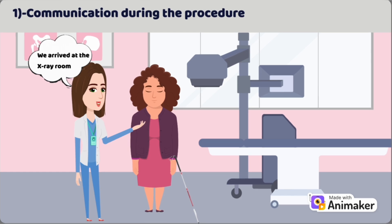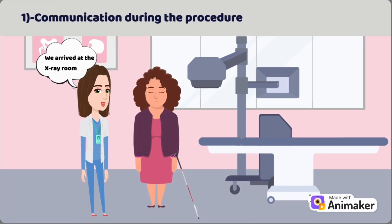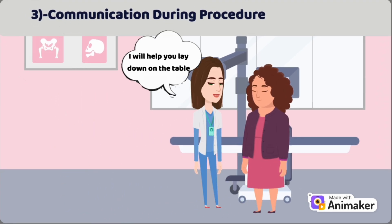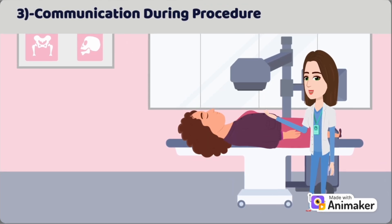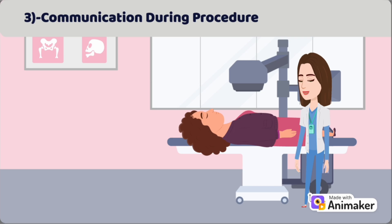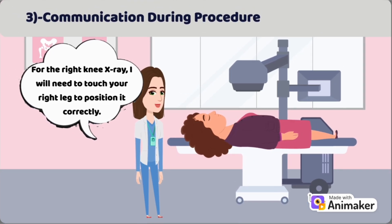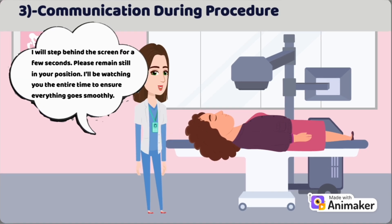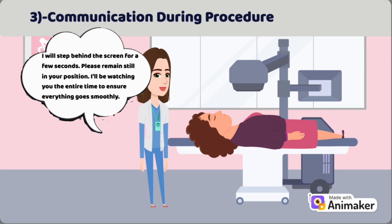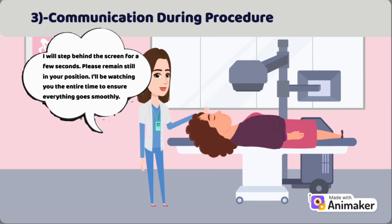During positioning, give clear verbal instructions, and if necessary, offer physical assistance only with the patient's permission. During the radiographic procedure, maintain a calm and reassuring tone. Explain each step clearly, such as when you're positioning them or adjusting the equipment. Always inform them before any movement occurs and allow them time to adjust to new positions. For example, say: 'For the right knee x-ray, I will need to touch your right leg to position it correctly.' Then say: 'I will step behind the screen for a few seconds. Please remain still in your position. I will be watching you the entire time to ensure everything goes smoothly.'